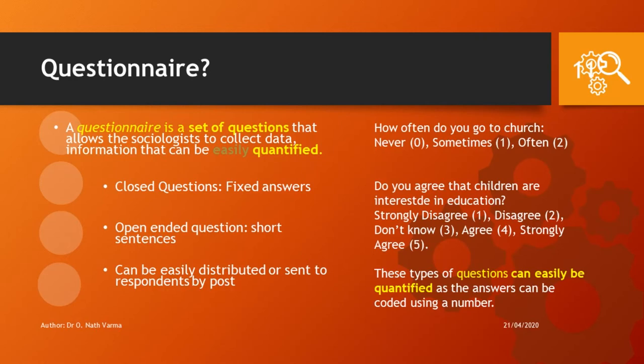How do sociologists quantify information? For example, the question: how often do you go to church? The options are: Never=0, Sometimes=1, Often=2. The sociologist assigns a number to each answer and can easily tabulate those numbers and arrive at percentages. Another example: do you agree that children are interested in education? Strongly disagree=1, Disagree=2, Don't know=3, Agree=4, Strongly agree=5. Once you get answers from many people, you can use these figures to tally and quantify the answers and present them in percentages.